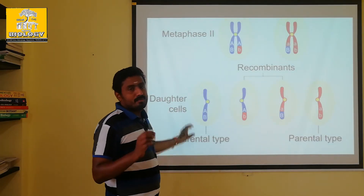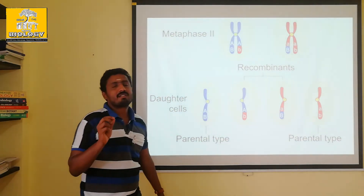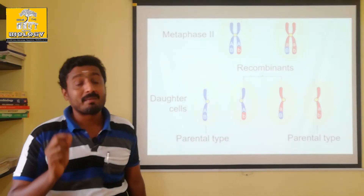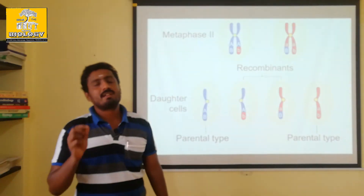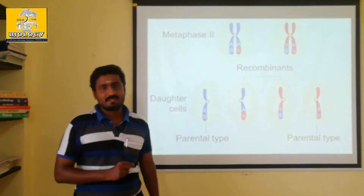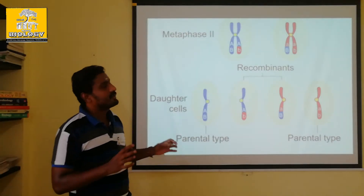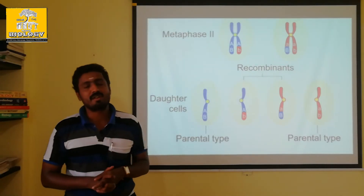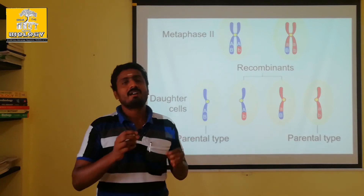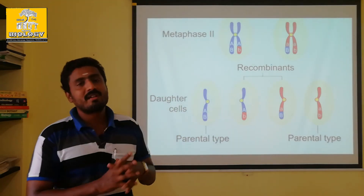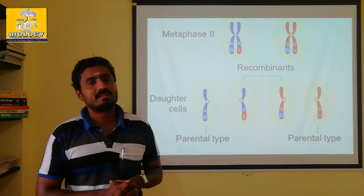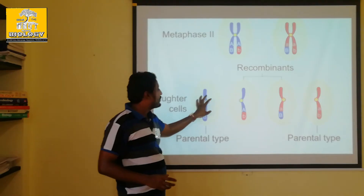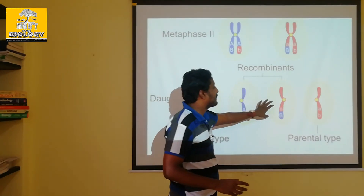Already you may know that the diploid chromosomes are converted into haploid during meiosis. So this is meiosis — diploid condition chromosome to haploid.